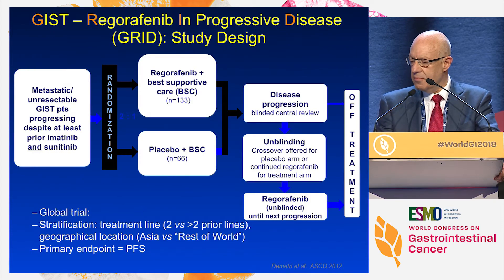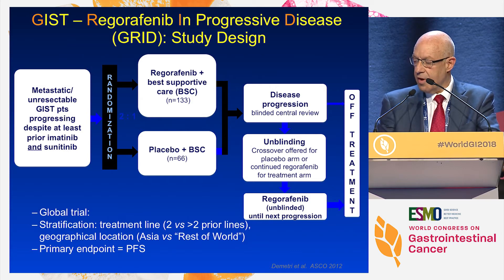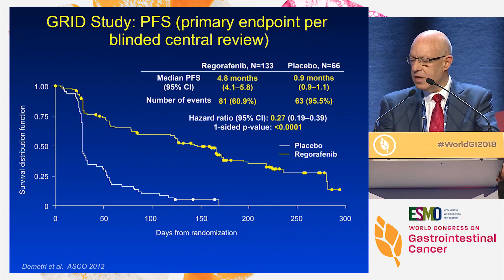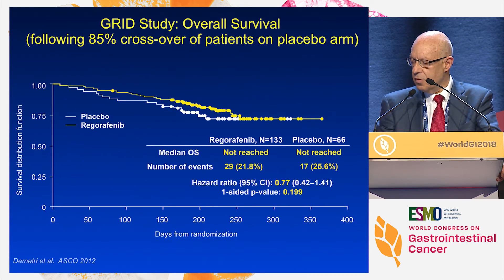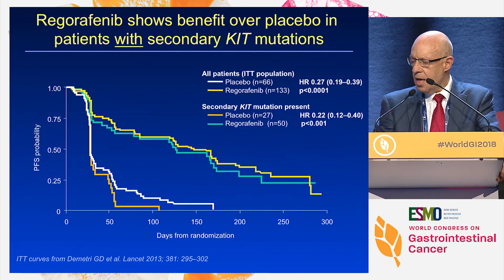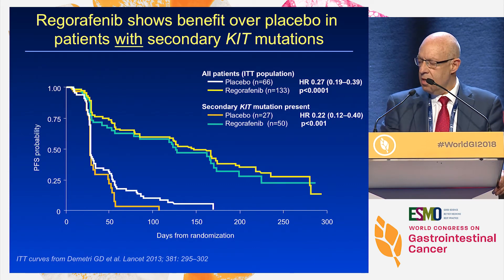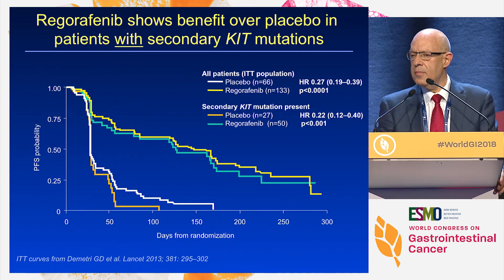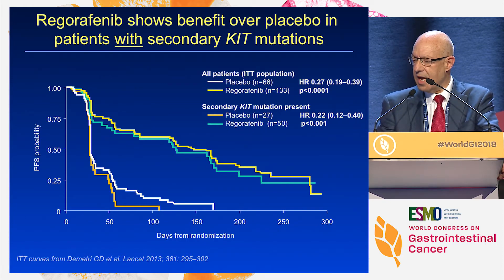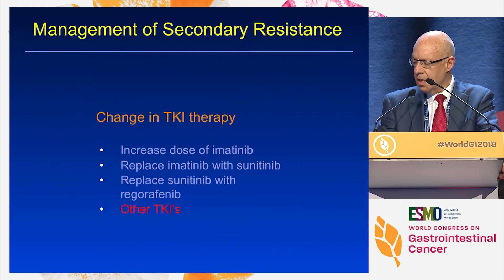Replacing sunitinib with regorafenib was the next change. This was the GRID study — regorafenib versus placebo — showing a very significant benefit in terms of progression-free survival, but again with crossover, no difference in overall survival. Looking at patients with secondary mutations in KIT, we see the same results: regorafenib appears to be active whatever the underlying mutation.